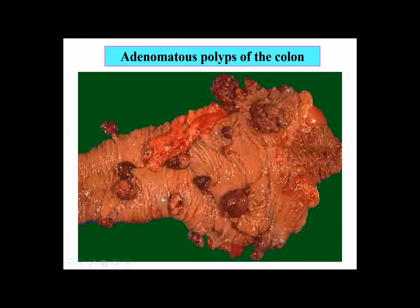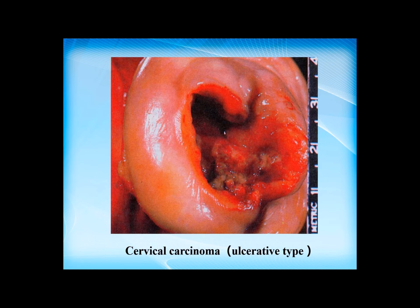This is the colon. In this specimen, we can find a polypoid structure, so this is the adenoma of the colon. This is a cervical carcinoma — here we can find the ulcerative tumor.